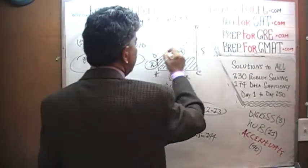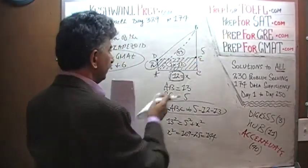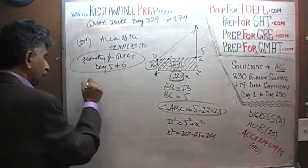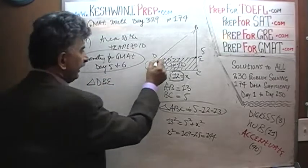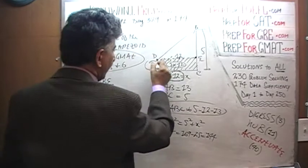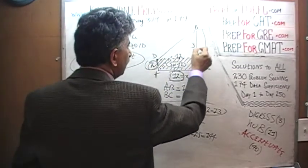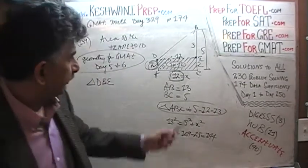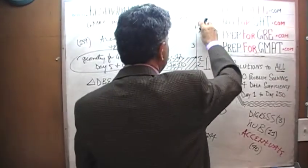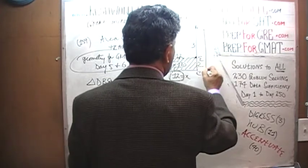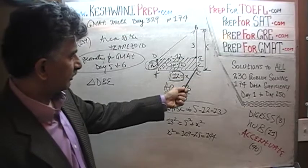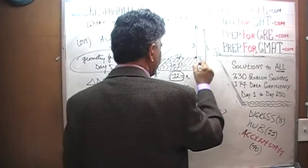Now let's look at triangle DBE. We have to figure out the area of triangle DBE. The base D to E is the same as A to C, which is 12. Since B to C we were told was 5, and this side is 2, B to E would have to be 3. This entire distance we were told is 5, and this distance is 2, so whatever remains — B to E — is 3.